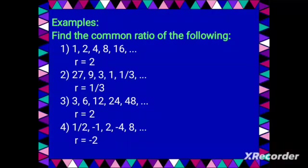So for examples, we want to find the common ratio of the following sequences. For number one, the sequence is 1, 2, 4, 8, and 16. The common ratio is 2, because 2 over 1 equals 4 over 2, equals 8 over 4, equals 16 over 8 — all equal to 2. You can do the same with numbers two, three, and four to find their common ratios.